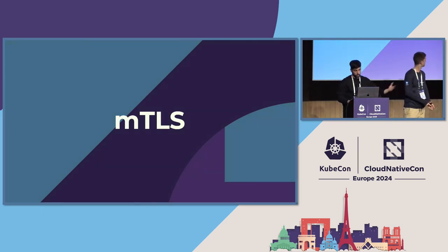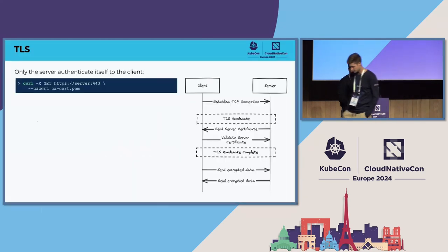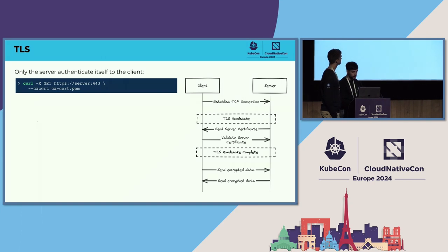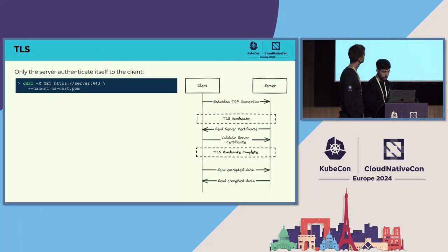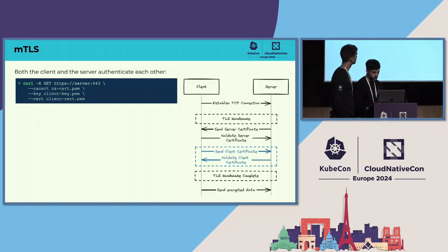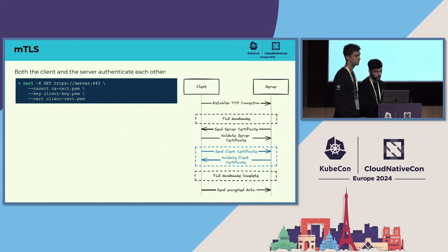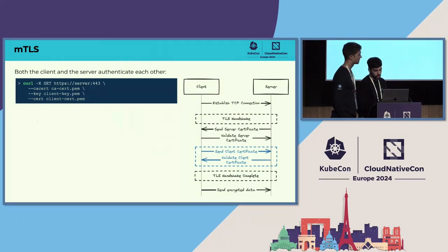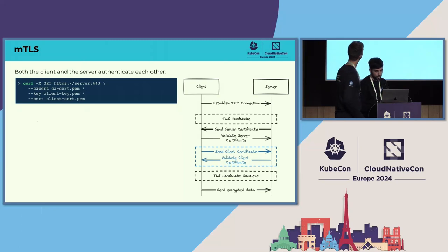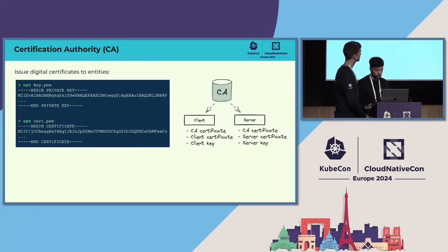So what is MTLS? Most of you probably already know it, but for those that don't, let's start. Most of you are probably familiar with TLS — it's a traditional protocol used by many websites to encrypt traffic. In TLS, the client has to validate the server certificate in order to establish an encrypted communication. With MTLS, both the client and the server authenticate each other. The server also has to validate and authenticate the client certificate in order to establish encrypted communication.